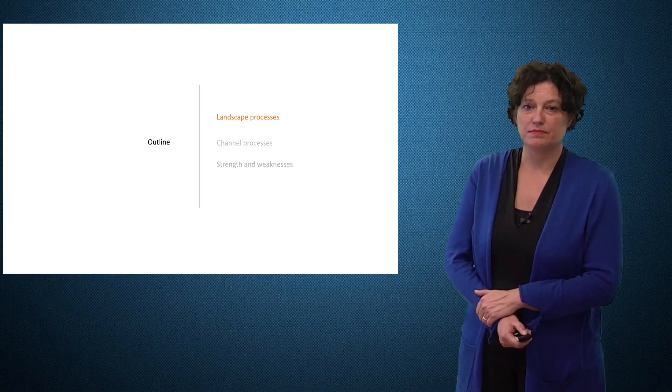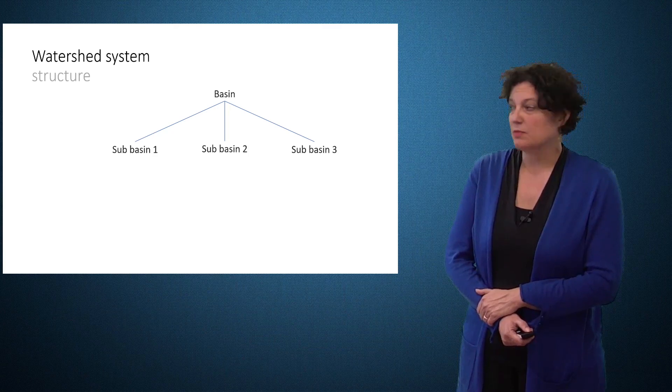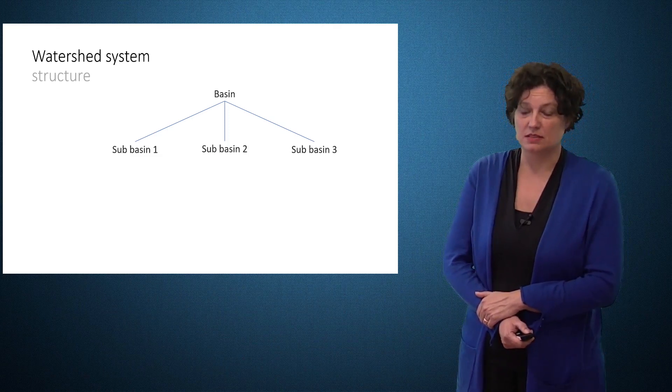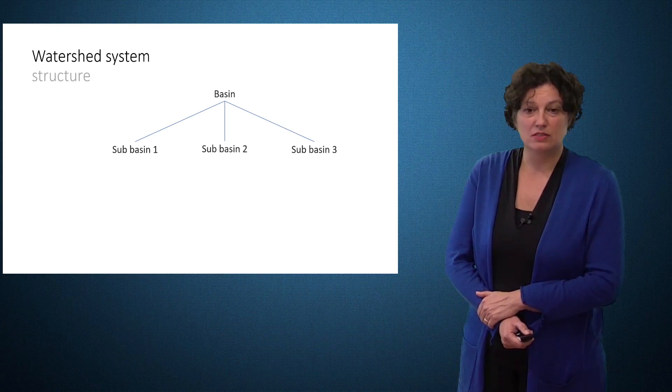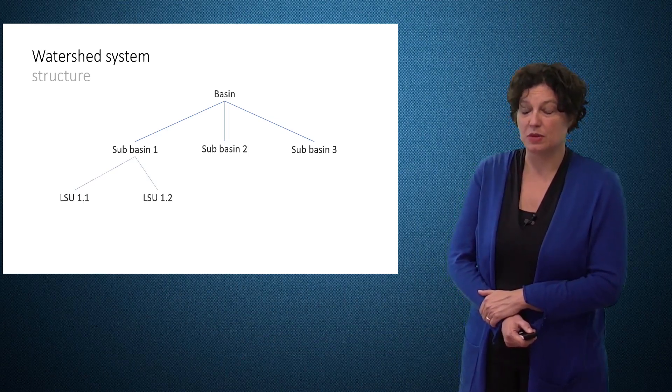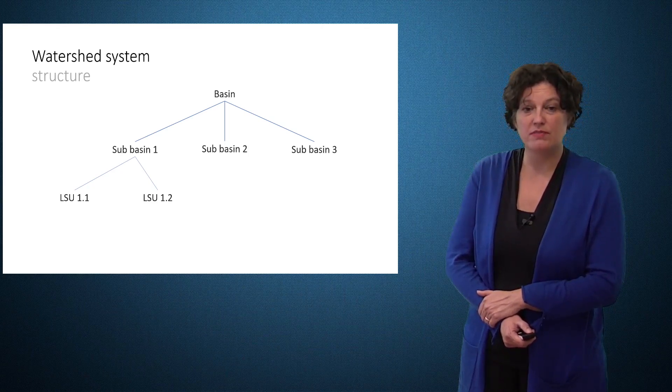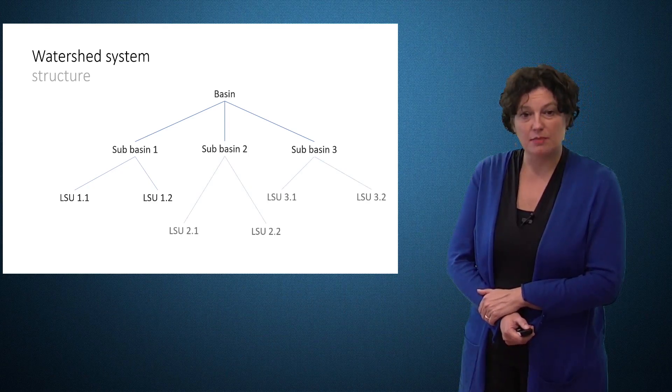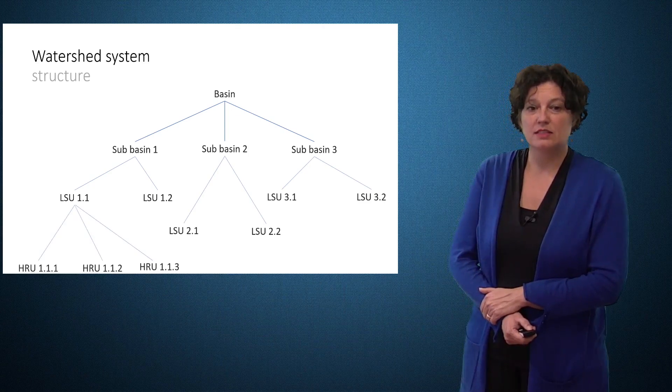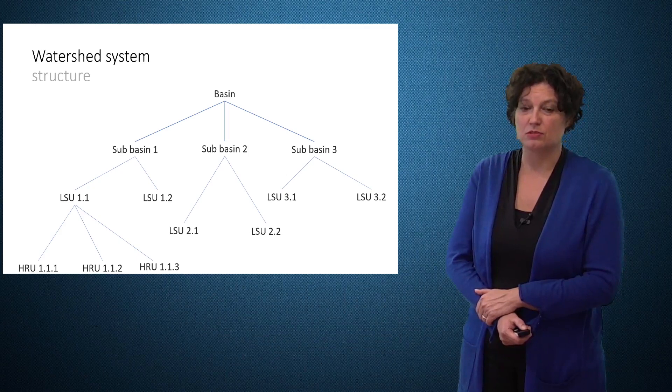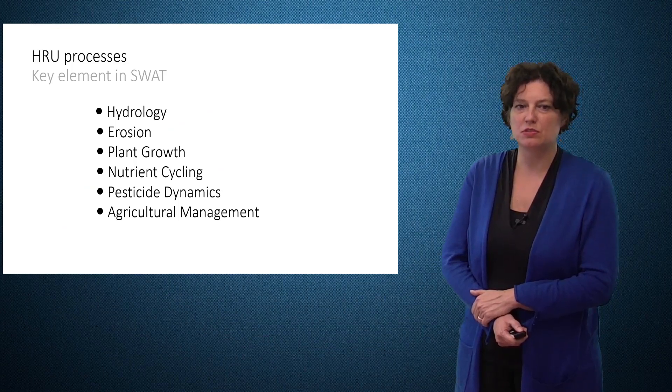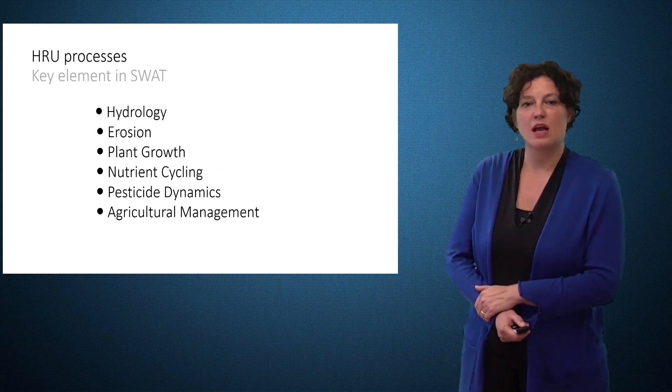The watershed system or the catchment is subdivided in SWAT in different elements. First level are the subbasins, identified on the basis of the topography map. Each subbasin within SWAT Plus can further be subdivided in landscape units. You may have the upland areas and the lowland areas that are identified separately. Each landscape unit can then further be subdivided in HRUs. The HRUs are very important within SWAT because it is at this level that most of the processes happen.